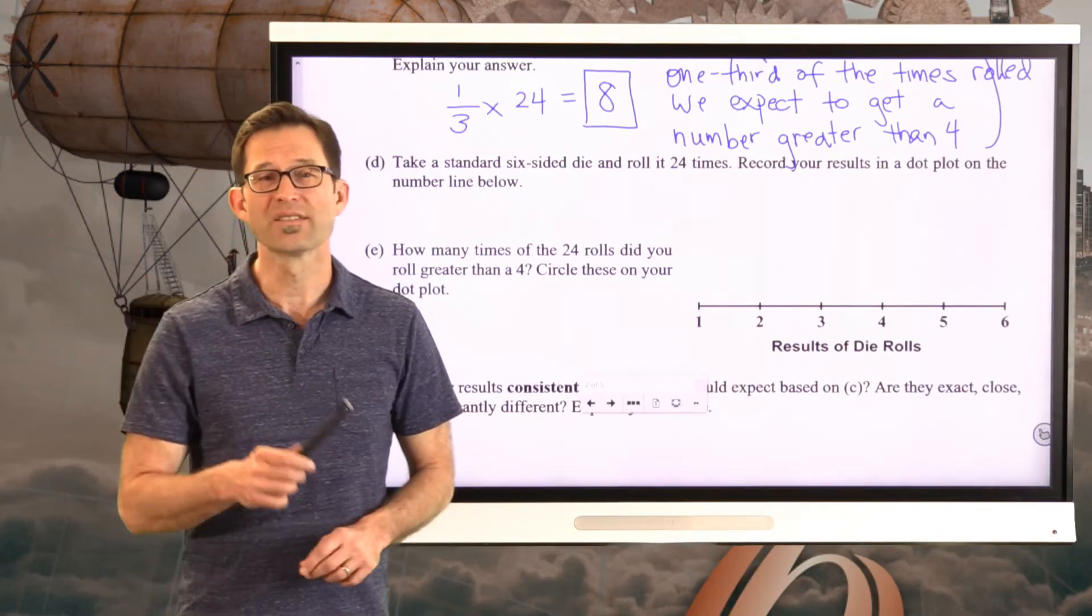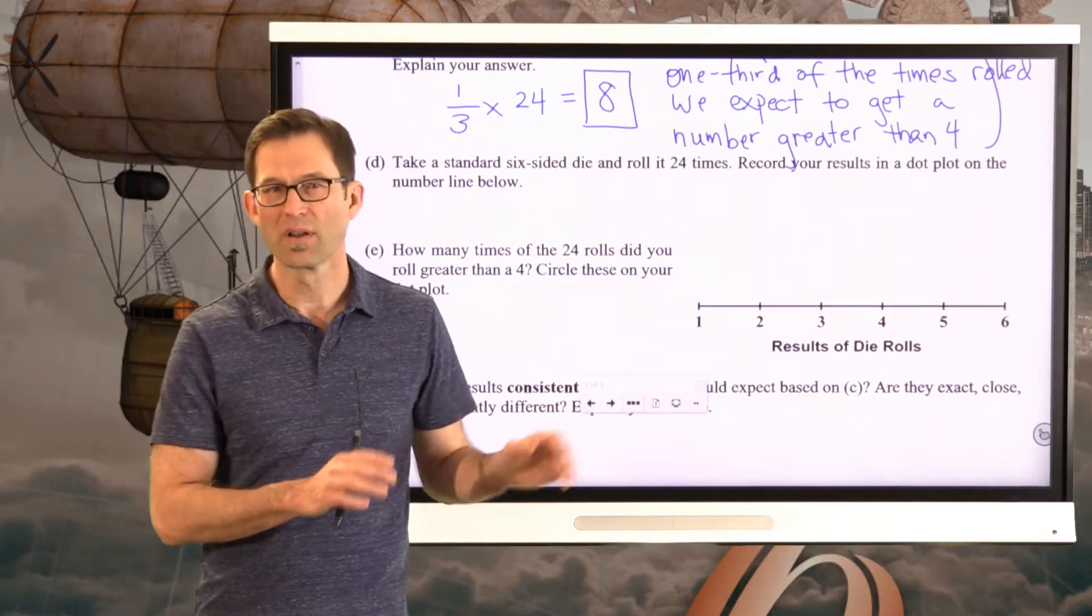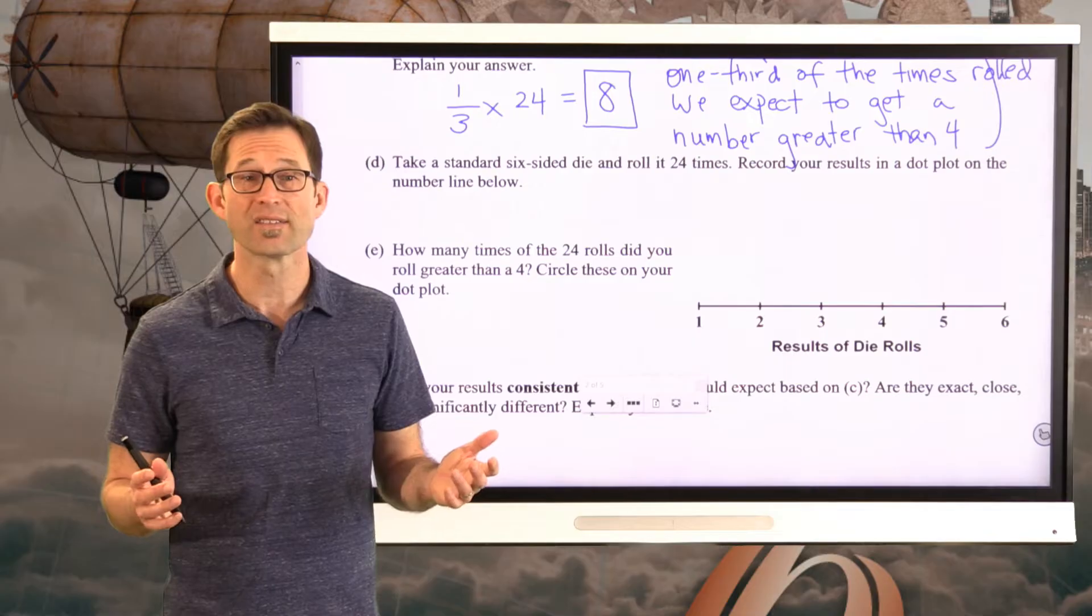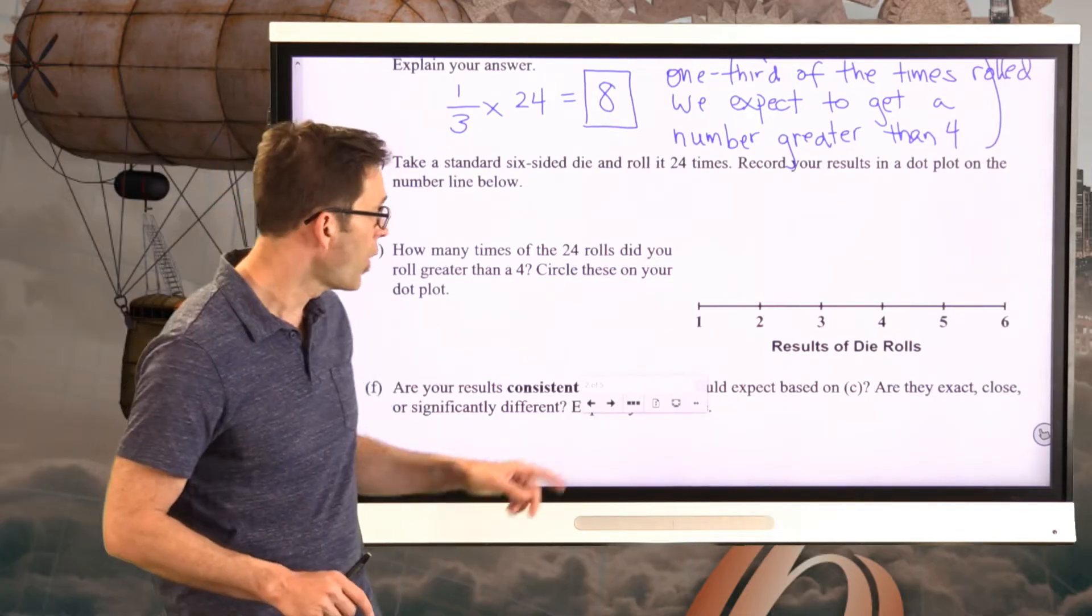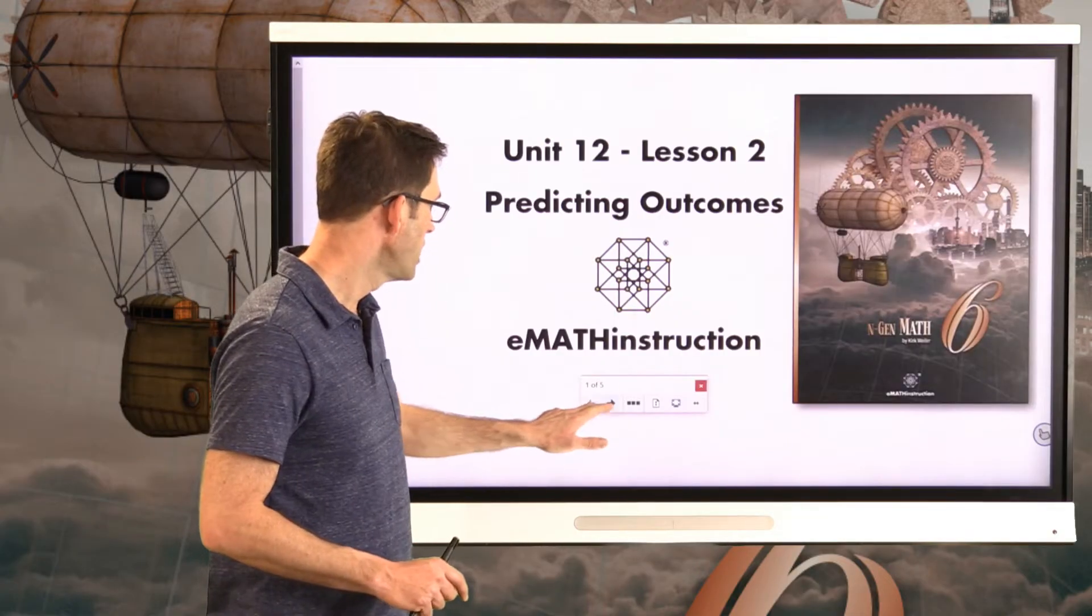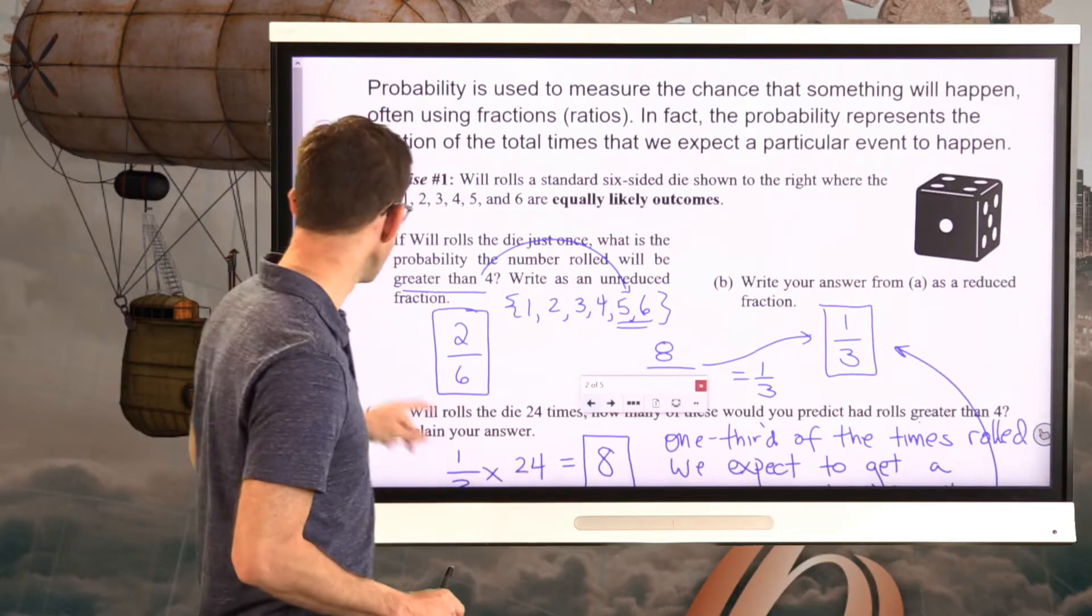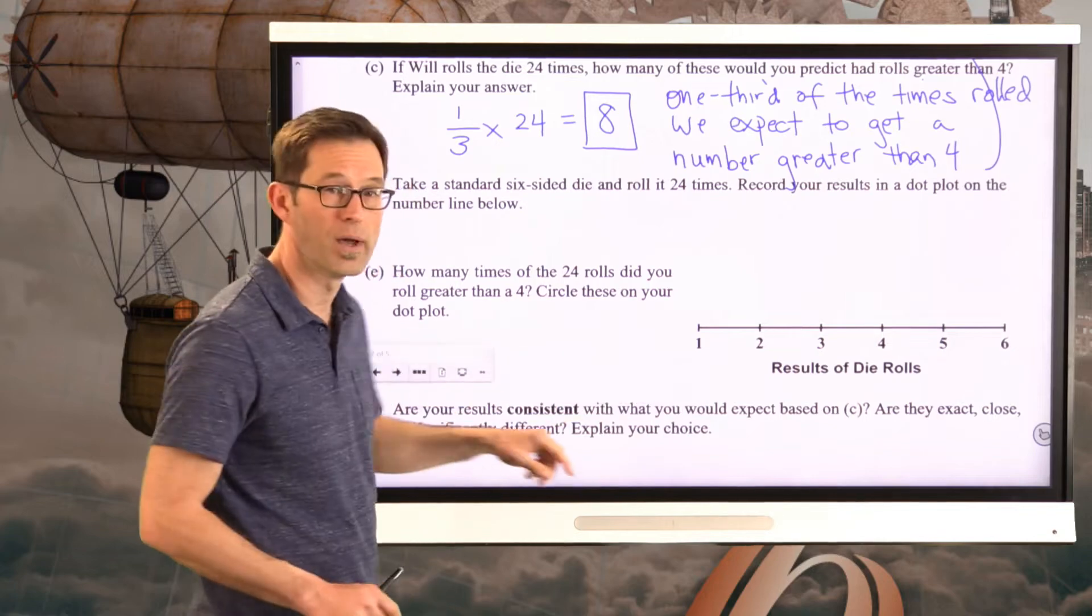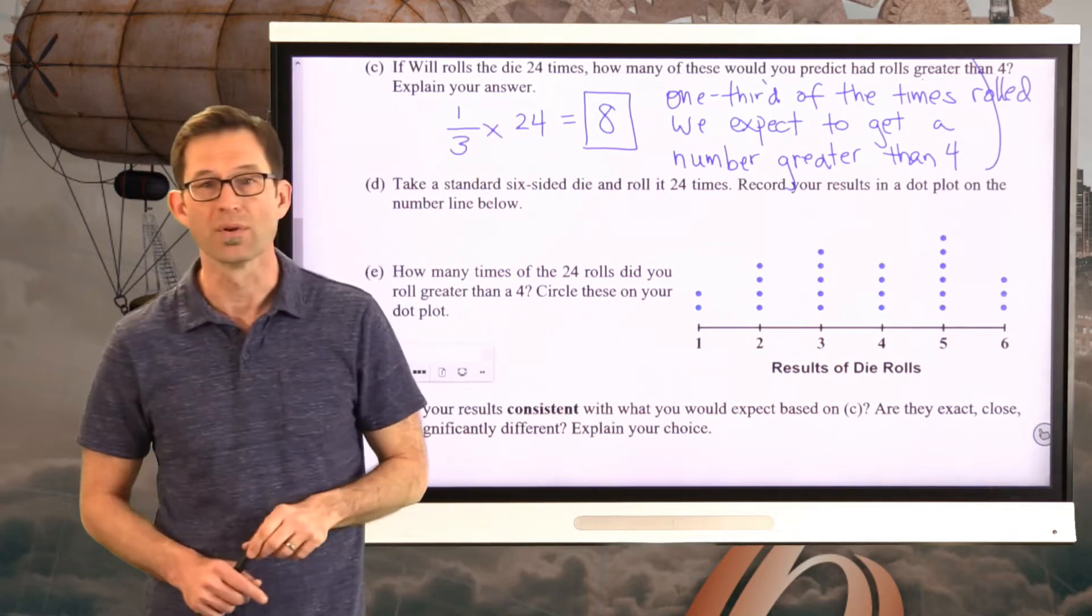We do a lot of simulation work in Math 7, very little in Math 6. But there's no way for me to know your results, they're kind of random. So I did this experiment myself and here were my results. In a perfect world, we would actually expect this to be what's called a uniform distribution. In other words, we'd expect to have the same number of dots above each one of those numbers.